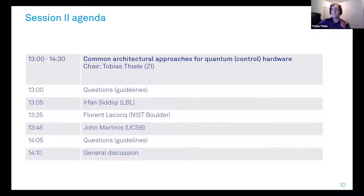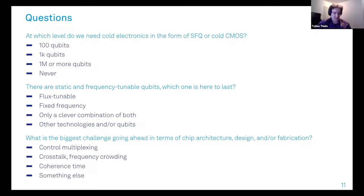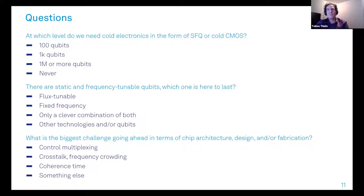Here are the three questions. The first one: at which level do we need cold electronics or a different approach from the coaxial approach — for example SFQ or cold CMOS? This could be at the 100-qubit level, the 1000-qubit level, the million-qubit level, or perhaps never.